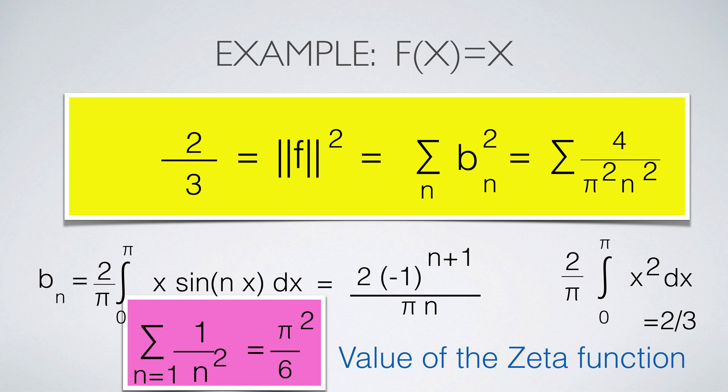Here is the prototype example. The function is f equal to x. The square of its length is 2/3. The square of the Fourier coefficient b_n is 4 over π squared n squared. Parseval tells us now that the sum of the reciprocals of the squares is π squared over 6. This is the solution of the Basel problem. It is the value of the famous zeta function at the point s equal to 2.